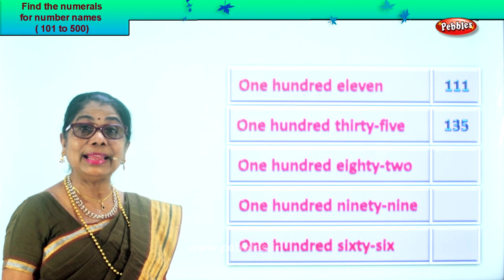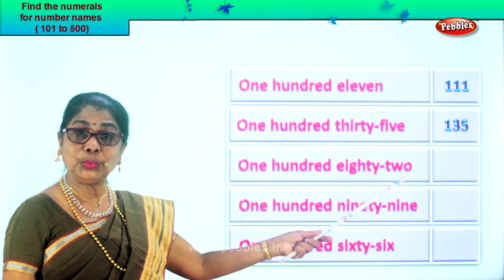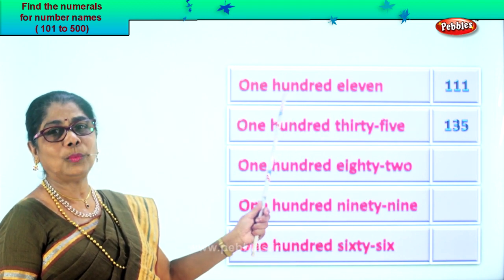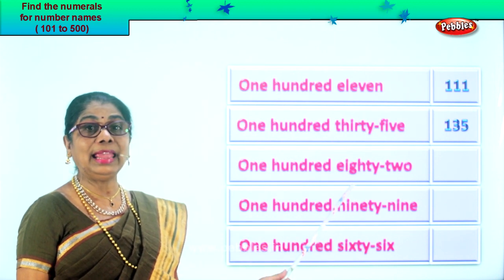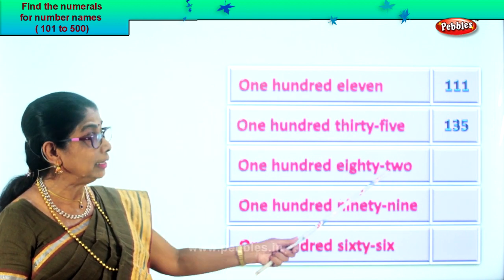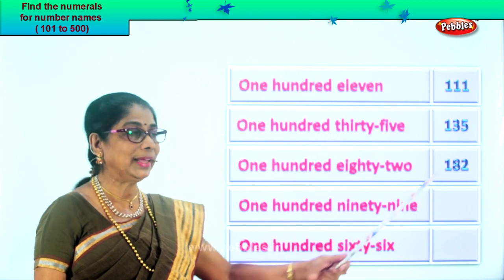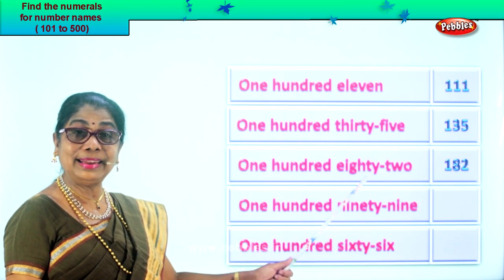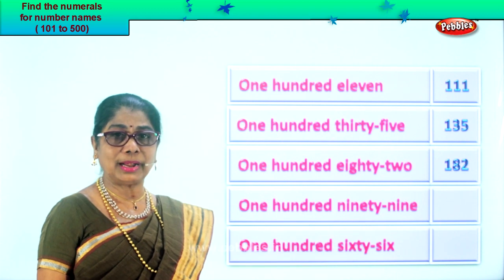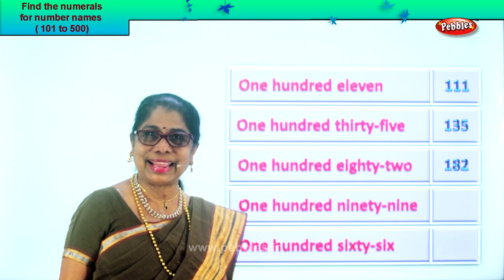Are you enjoying the exercise? Let's go to the next number name: one hundred eighty-two. One hundred is here, and what else is there? Eighty-two. Hundredth place one, and then you have eighty-two — eight in the tens place, two in the ones place. So one hundred eighty-two. Just as you read, you put the numeral down. One hundred eighty-two.